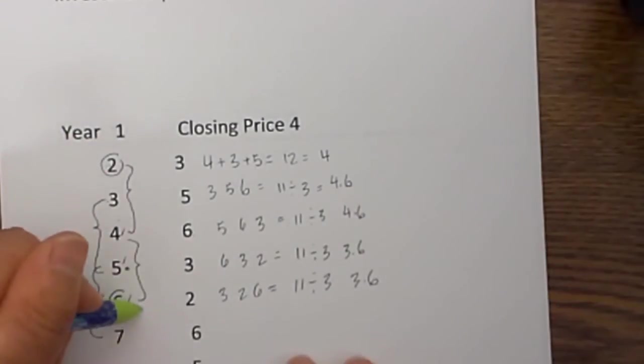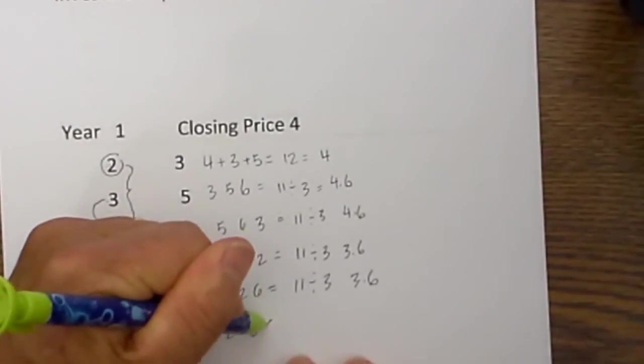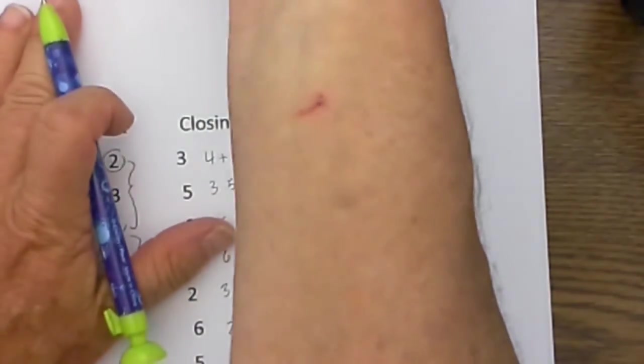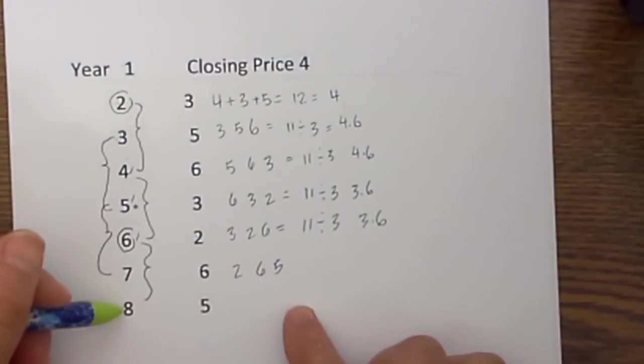Let me do one more. For year 7 it would be 2, 6, and 5. And here is why they call it a moving average. Let me move this up just a little bit and you can tell why it is a moving average,